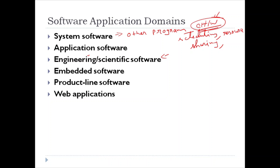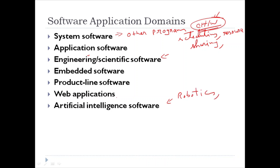Next are web applications, which span a wide array of applications. In their simplest form, web apps can be a set of linked hypertext files presenting information using text and limited graphics — essentially applications served through the web. Next is artificial intelligence software, where normal human intelligence is replaced by artificial means such as robotics, expert systems, pattern recognition (voice or image recognition), and artificial neural networks. Finally, open world computing refers to open source software.